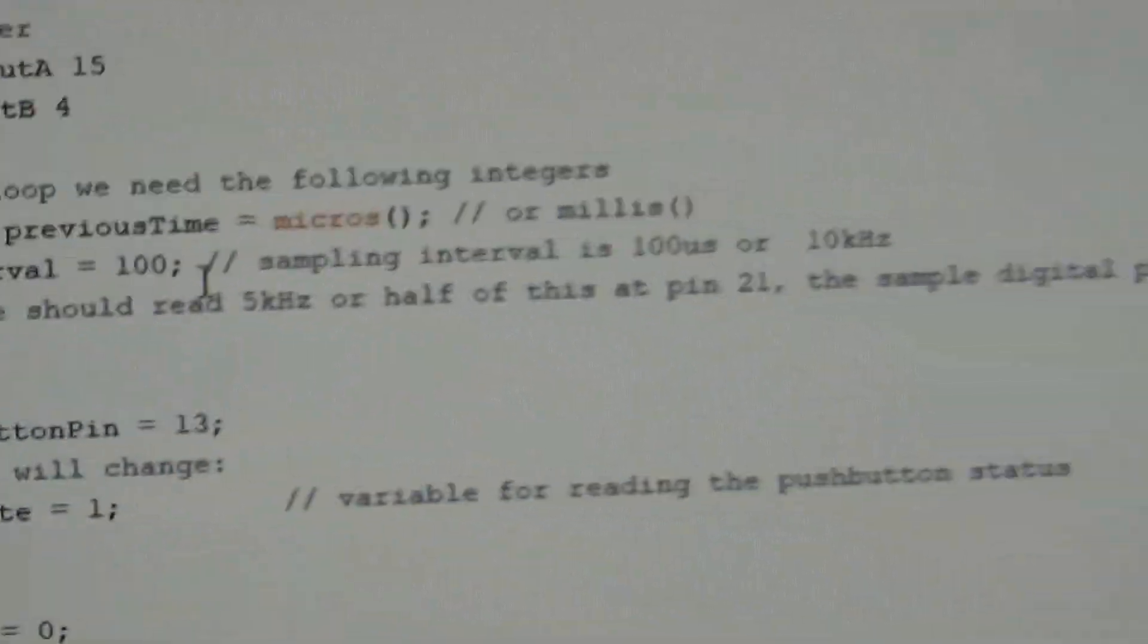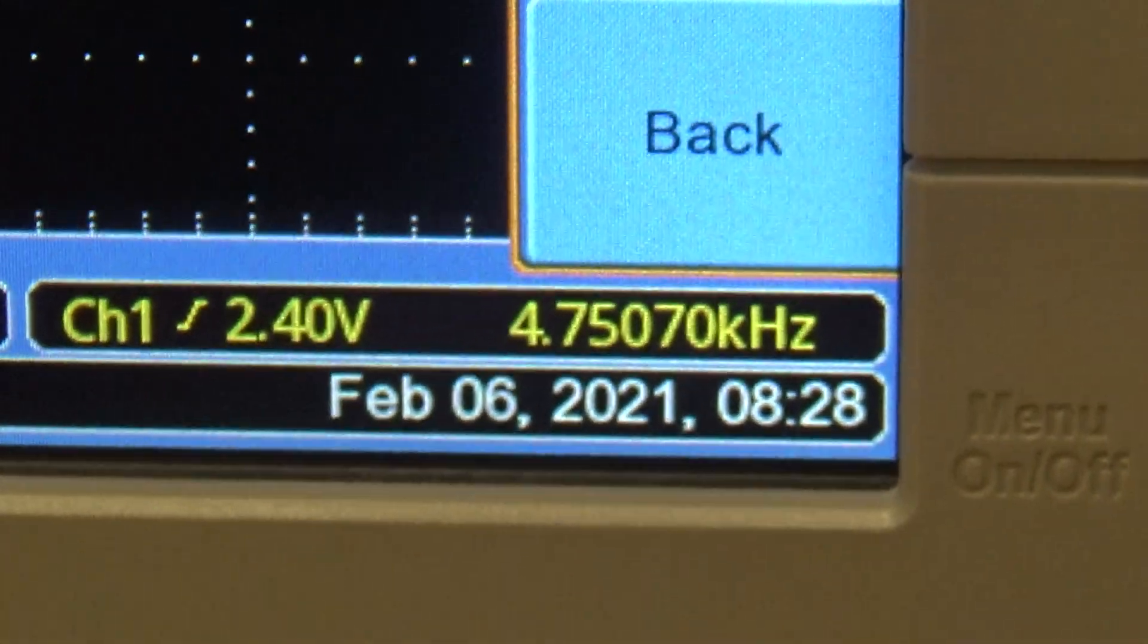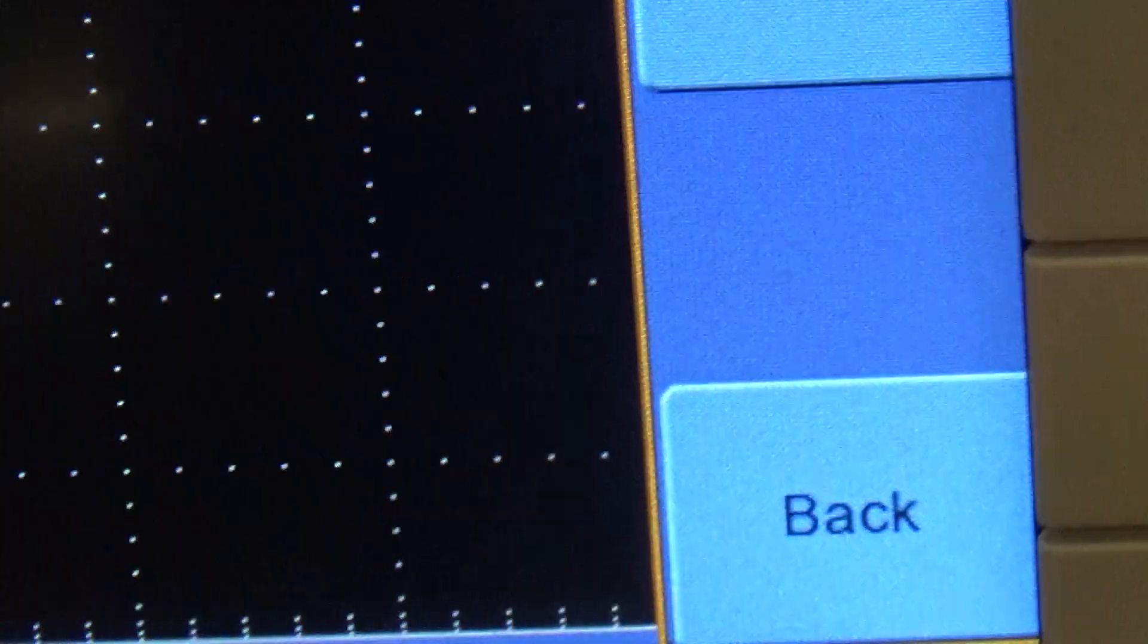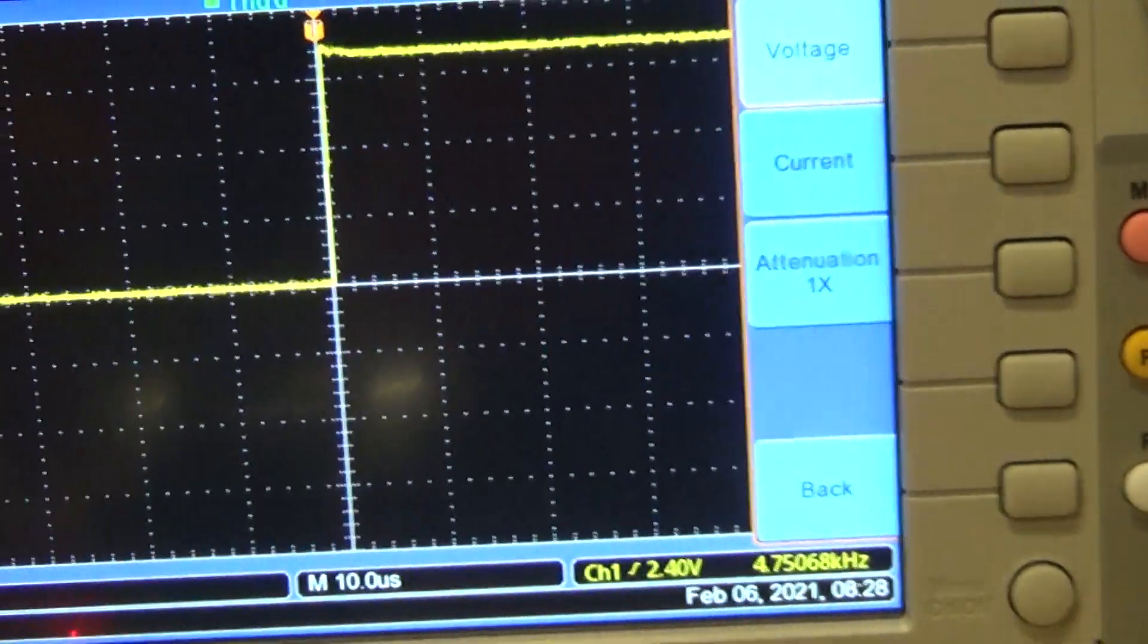So it's 100 microseconds and just to be sure if you go to the scope and remember how we did it the last time, you can check that's 4.7, it's nearly 5. Multiply by 2 which you have to do because we're measuring this period here and this one.